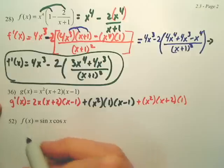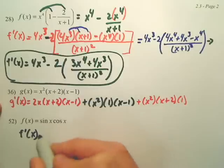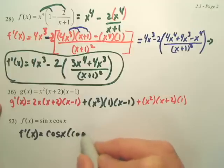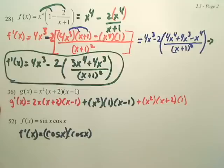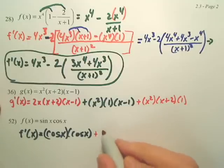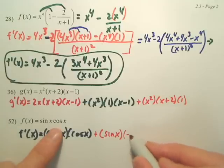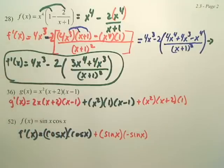This one's actually pretty easy. Problem 52. The derivative. It's a product rule. Derivative of sine is cosine. Leave cosine x. And that's a plus. Leave sine. And what's the derivative of cosine? Negative sine. Negative sine x. Sorry. Sometimes I don't say x, but I assume people know that.